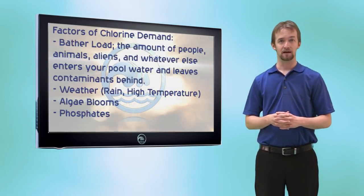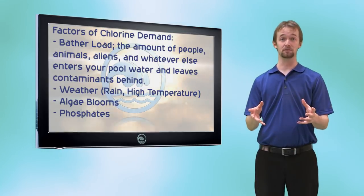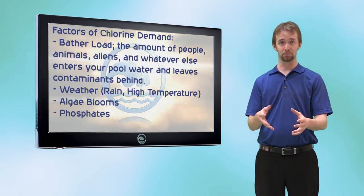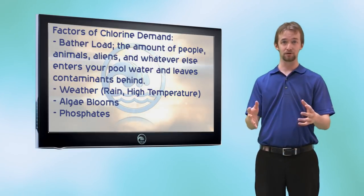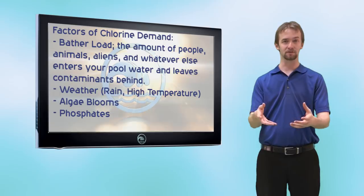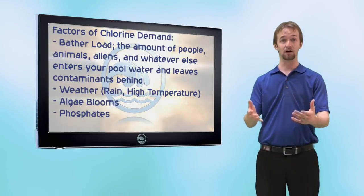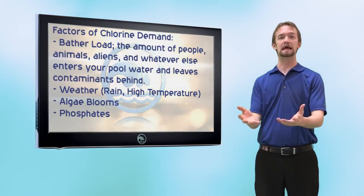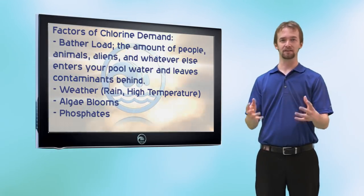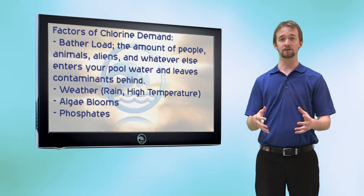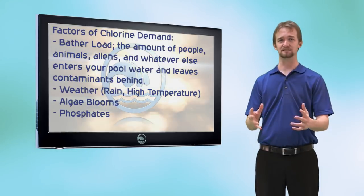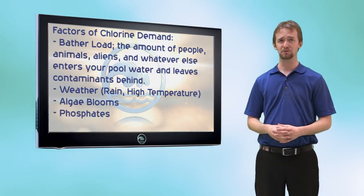There are several factors to chlorine demand, and the biggest one is bather load or heavy usage. The more humans you have in your pool — or dogs, raccoons, or whatever — the more bather load gets dumped into the water. This includes organic contaminants like oil, hair, sweat, and all that other nasty stuff. Other contributors to chlorine demand include heavy rains, excessive heat, and algae blooms.